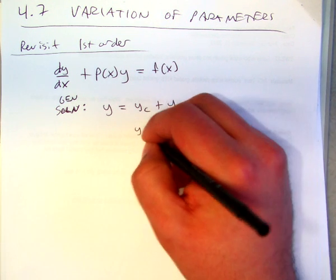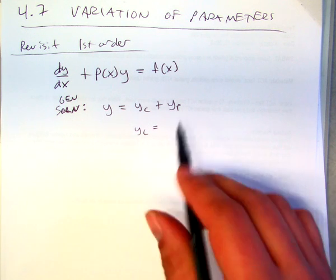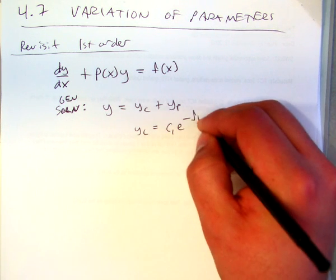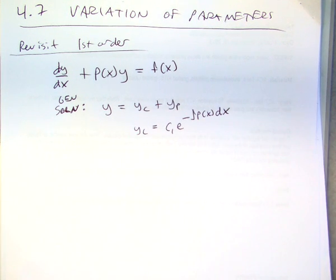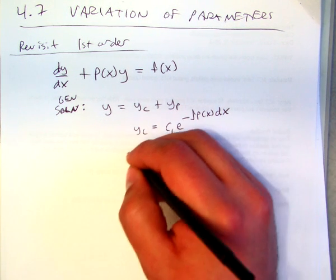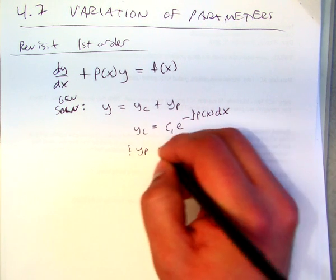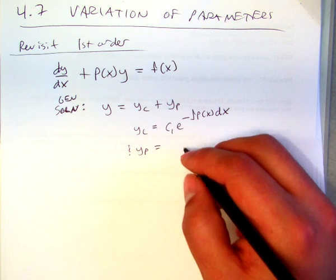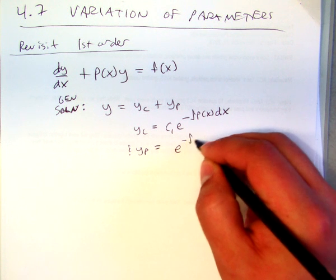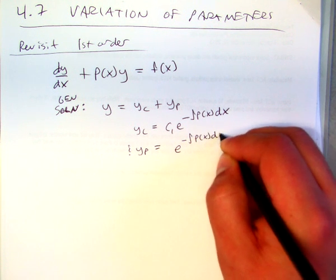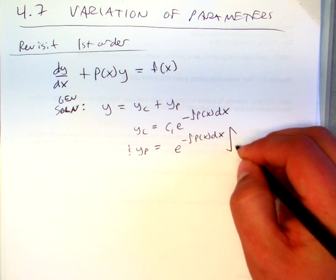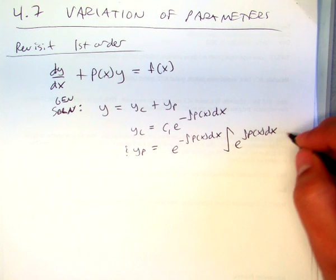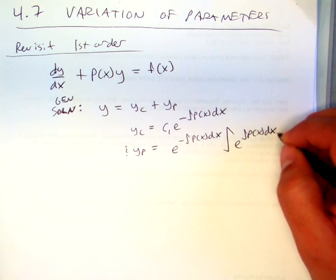Complementary solution, you can do the integrating factor and do all that. We're not going to do every step, but you can verify that this would be the complementary solution. And the particular solution is going to be e to the minus integral of p of x dx times the integral of e to the integral of p of x dx times f of x dx.